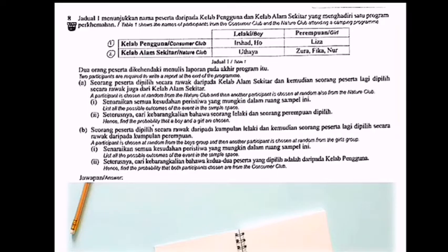How to list the sample space? I represent Isha as I or just H. Utaya as U. Liza as L. And Zura as Z. Fika as F, and No as N.